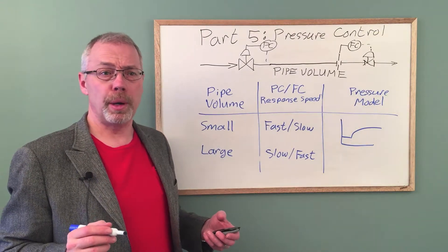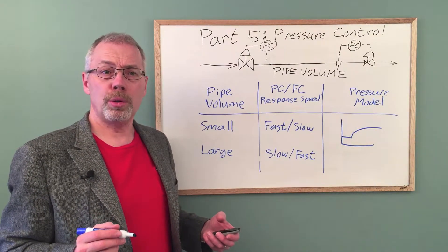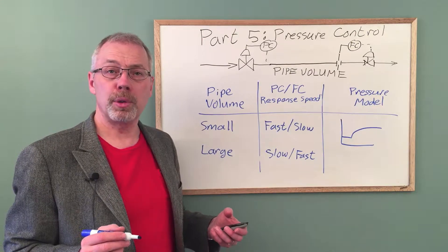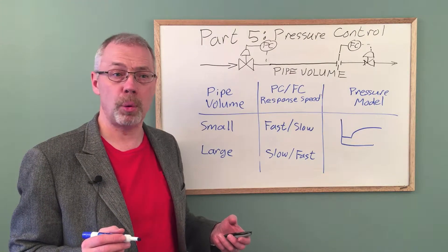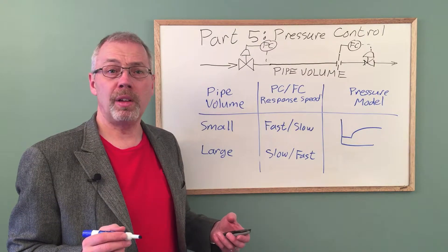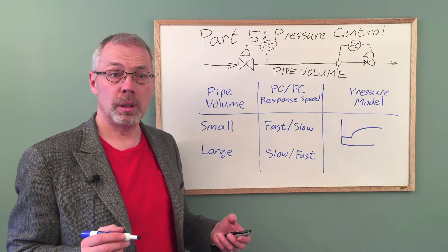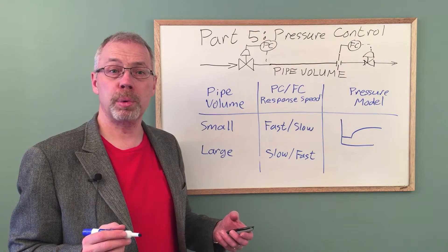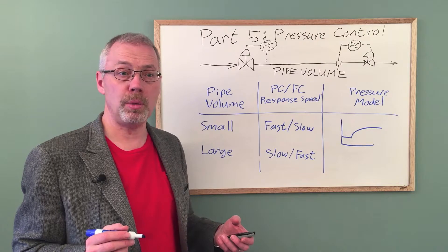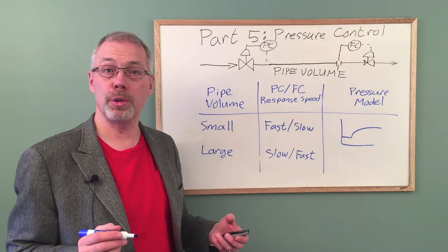How will the pressure respond? Since the flow controller is faster, from the perspective of the pressure control, the flow always appears to be on set point. The pressure valve opens up and admits more fuel gas. The outlet flow rate is constant. The pressure in the supply header increases continuously as more gas enters the piping.